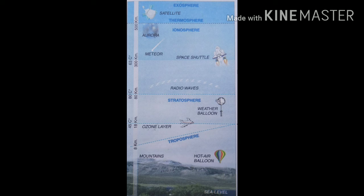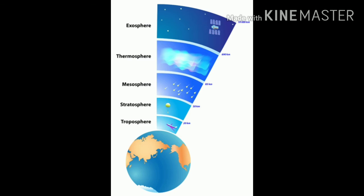You can also observe the distance between the layers. The distance between troposphere and stratosphere is about 8 to 18 kilometers. Between troposphere and stratosphere, the ozone layer exists. Radio waves and satellites also exist in these layers.